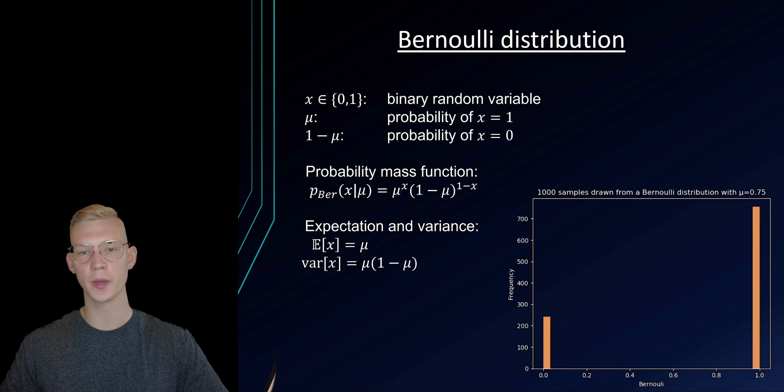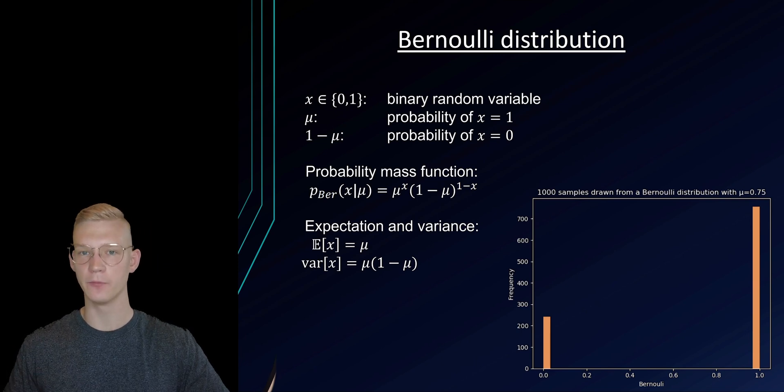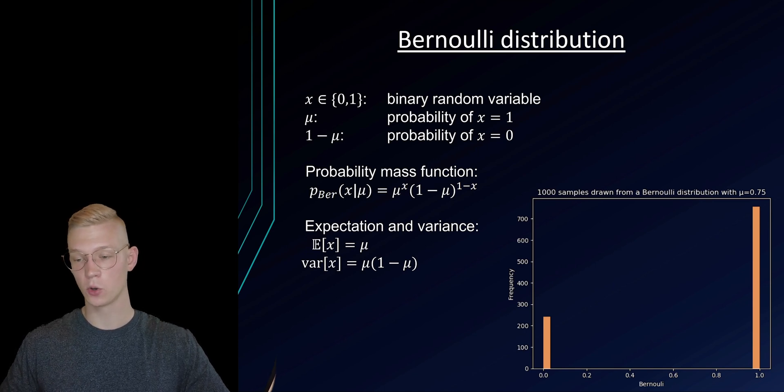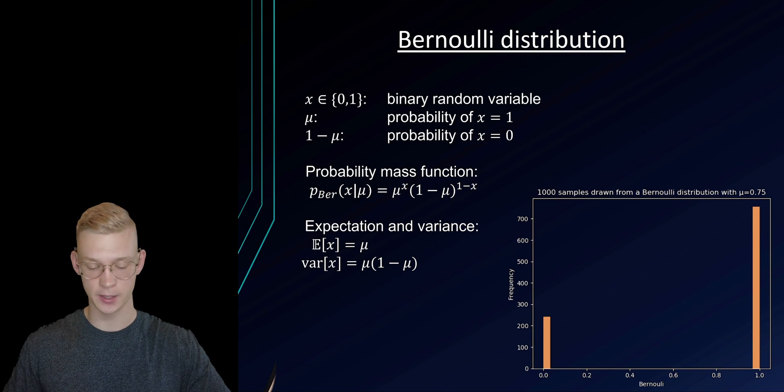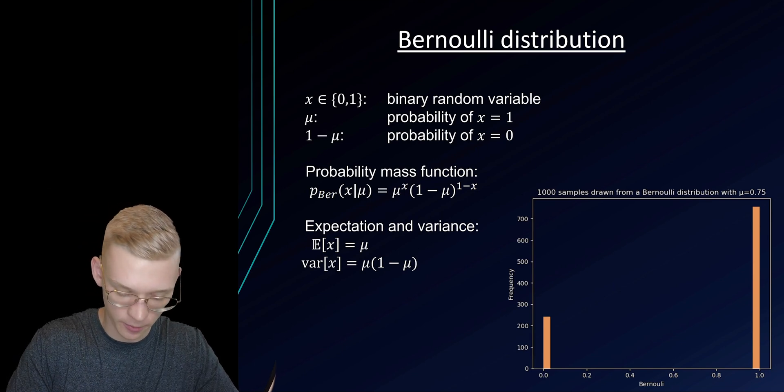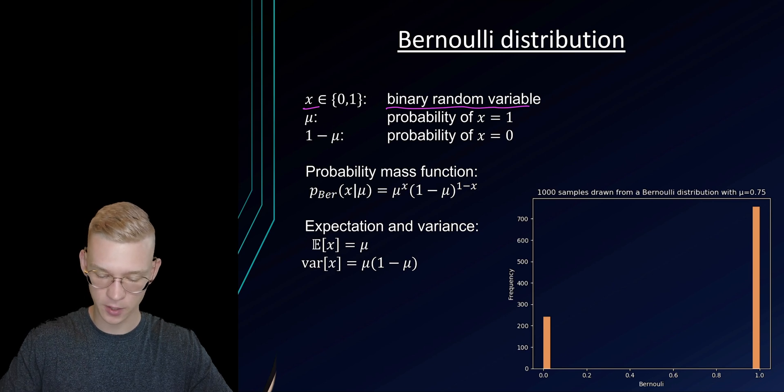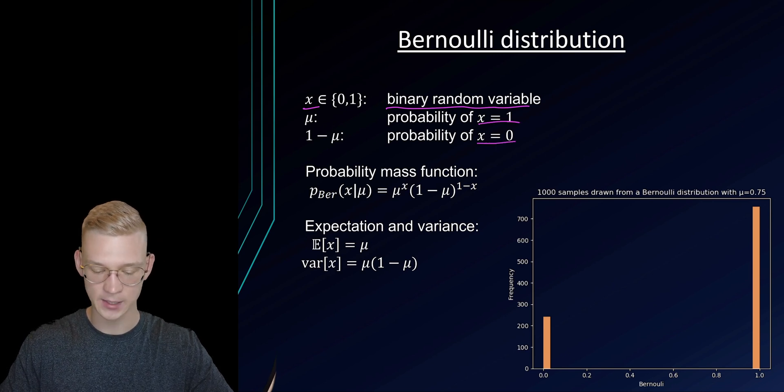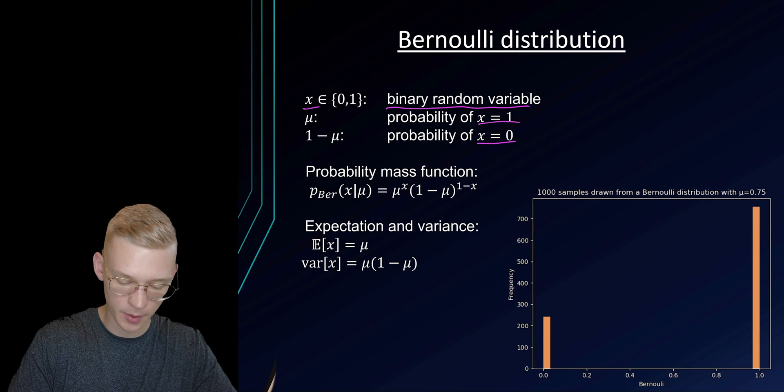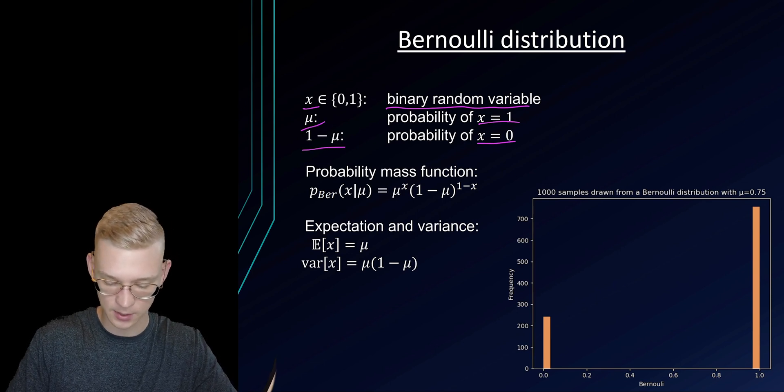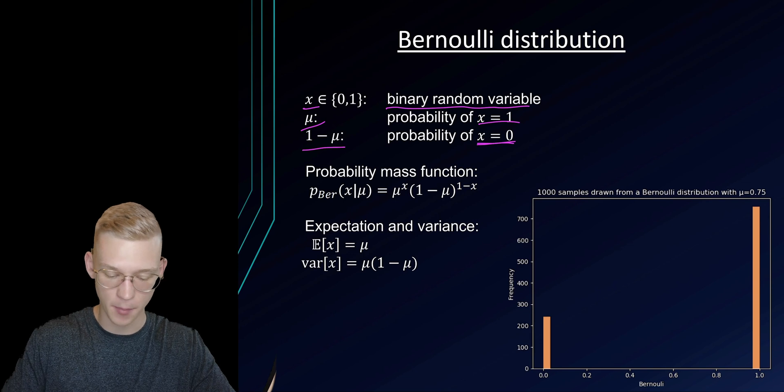So let's say we perform an experiment where our random variable has two possible outcomes. For example, if we throw a coin we can get either heads or tails. Our random variable is a binary random variable where we have either x equals 1 or x equals 0, and we call the probability of x equals 1 is mu and the probability of x equals 0 is 1 minus mu.